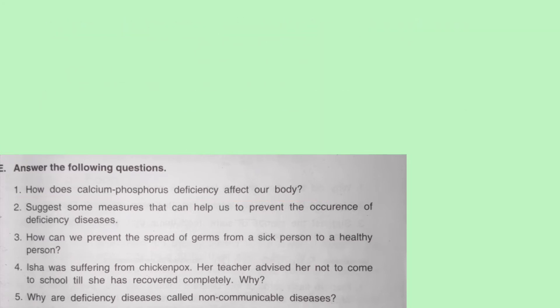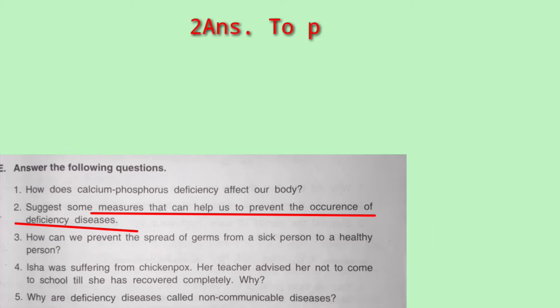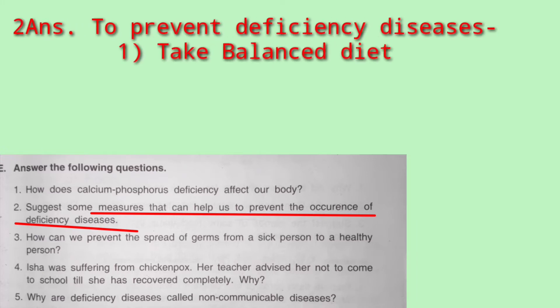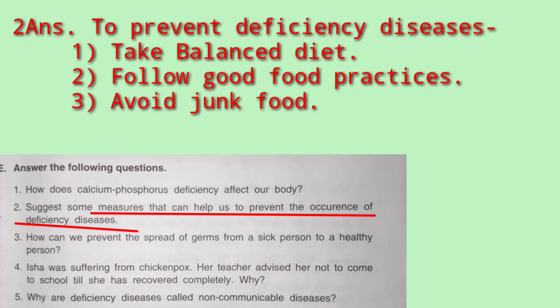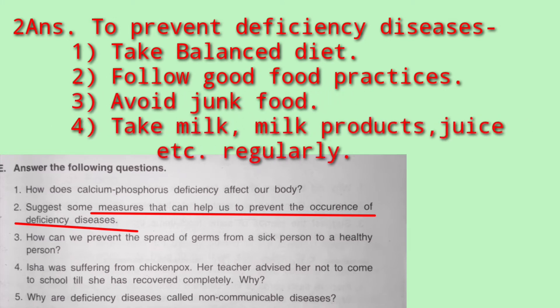Question two: suggest some measures that can help to prevent the occurrence of deficiency diseases. To prevent deficiency diseases, we need to take a balanced diet and must follow good food practices such as washing hands before eating.